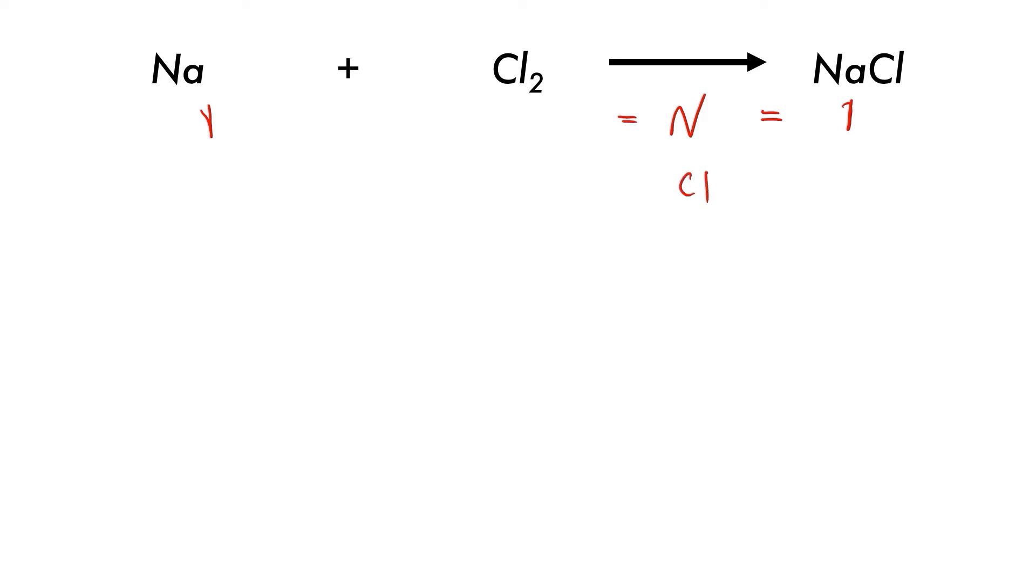Then for chlorine, we have two on the reactant side and one on the product side. We need to at least have two on each side for the chlorines because chlorine molecules always come as Cl2. We never have Cl1 in this case.